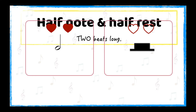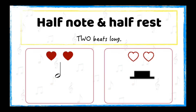A half note and half rest have two beats. Therefore, when counting a half note, we use two numbers. If the note starts on the first beat of the measure, we use numbers 1 and 2. If it starts on the second beat, we use 2 and 3. And if it starts on the third beat, we use 3 and 4. Remember to use a hyphen between the numbers to show that a note is longer than one beat. Here is an example of two half notes.